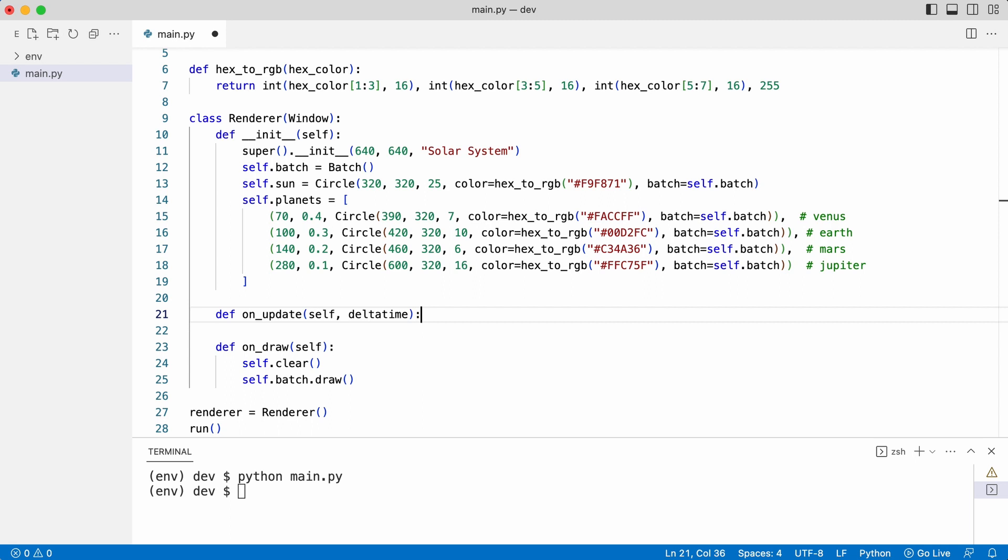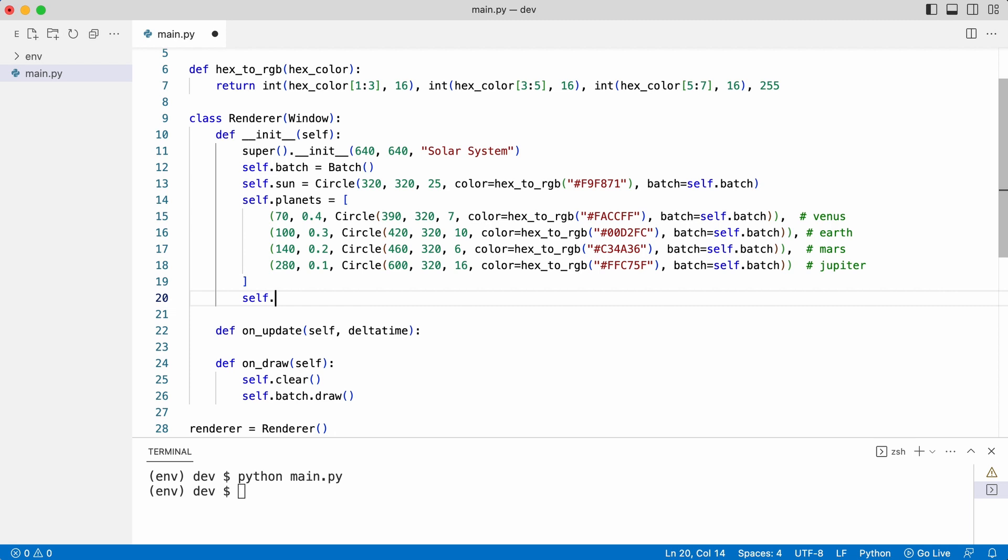But what needs to be updated exactly? Well, since everything needs to revolve around the sun an angle is needed. So Leo creates an angle variable and updates it in the update method.